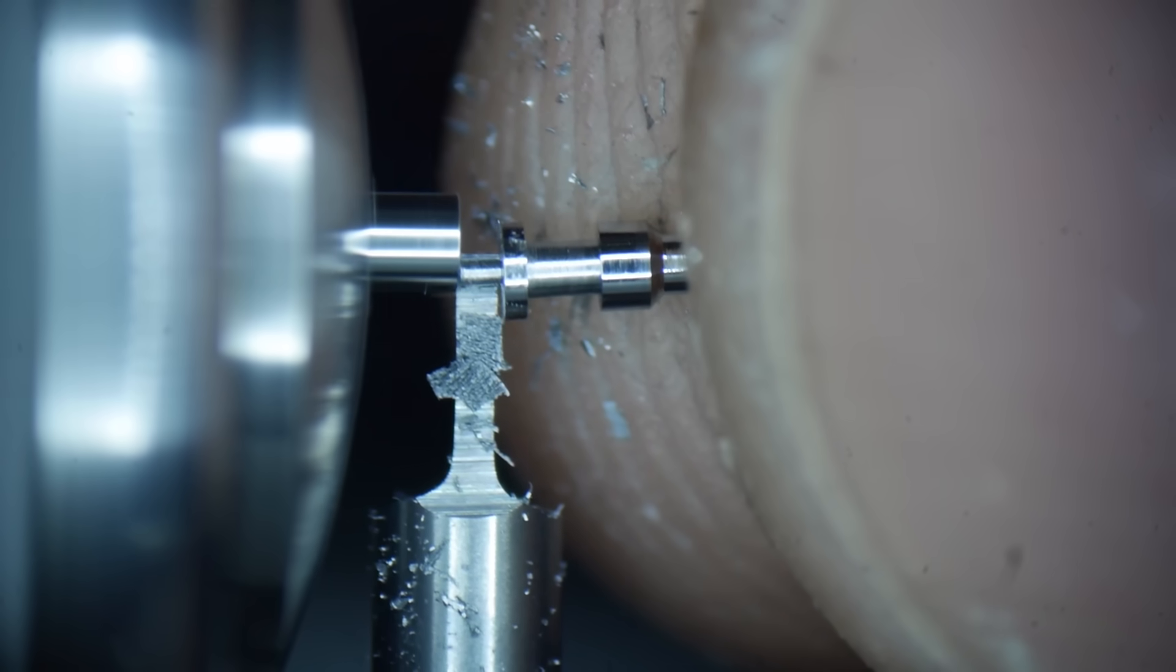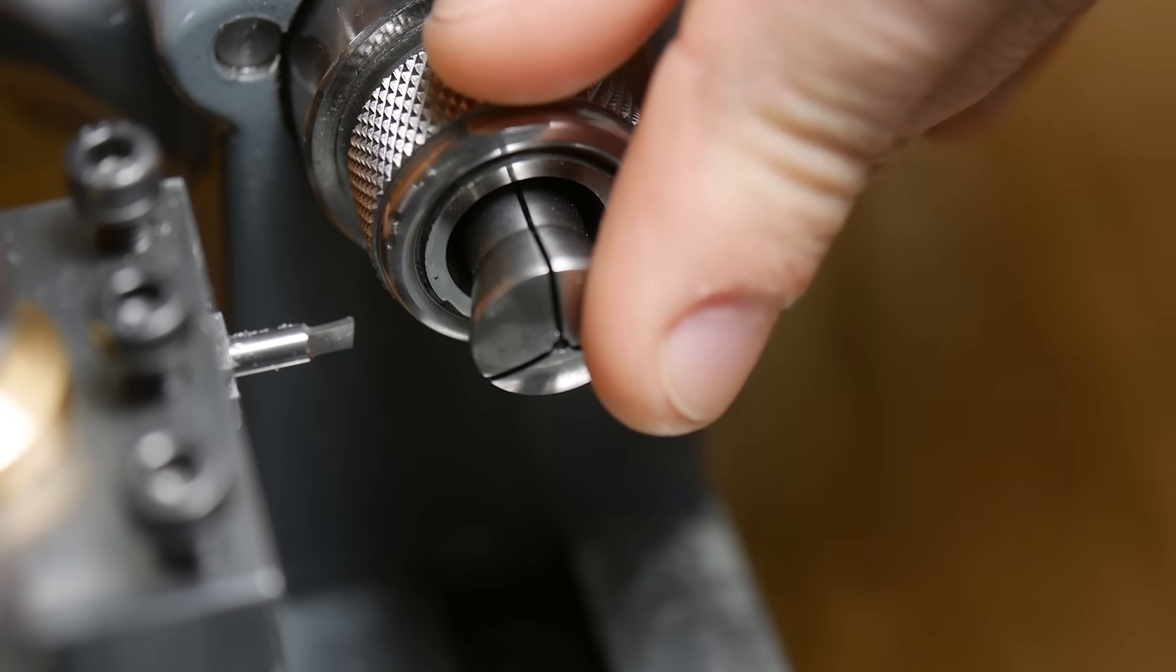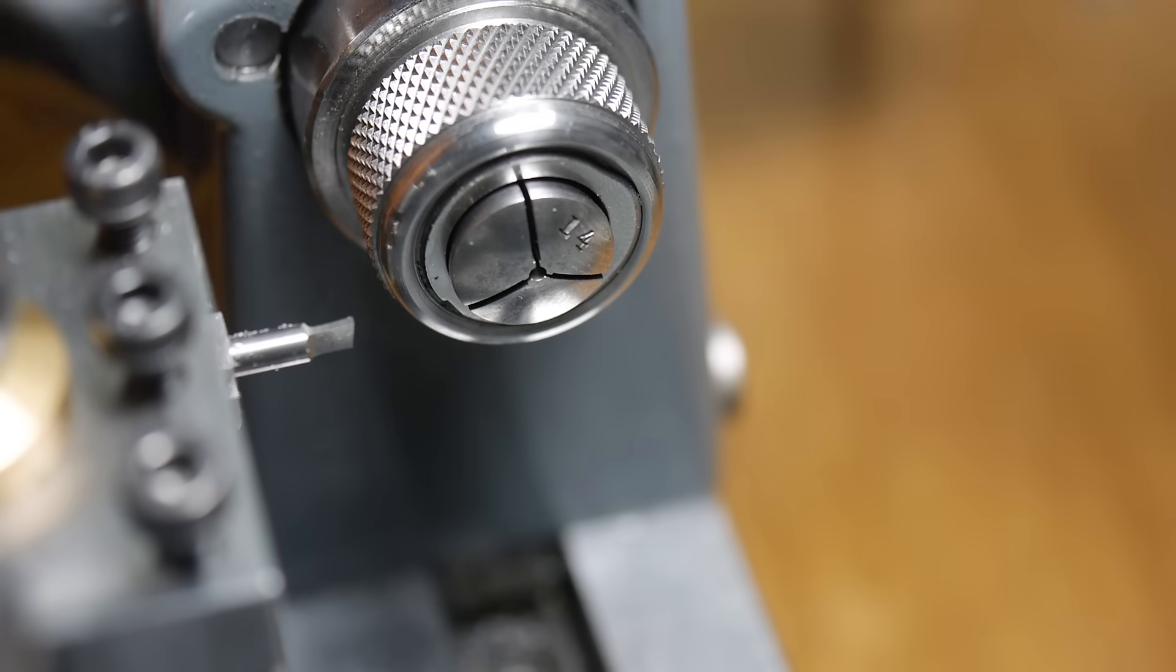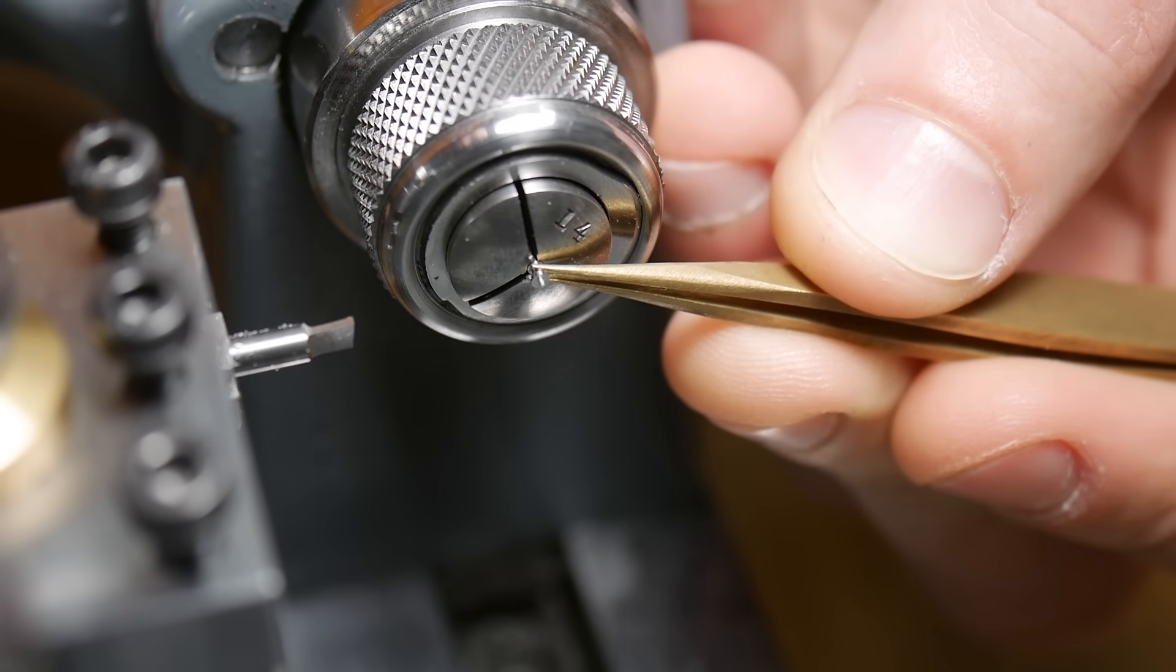I then reverse the pillars to cut the 0.6mm thread on the bottom of the pillars, before finishing and checking final measurements with the watchmaker's micrometer.